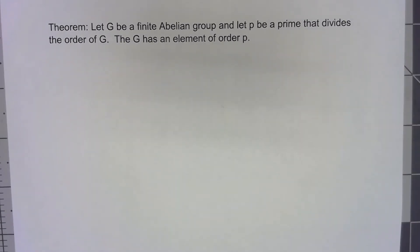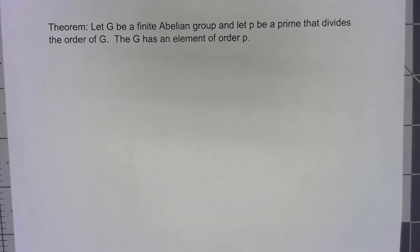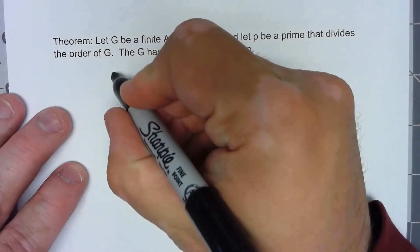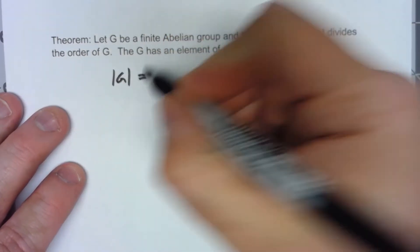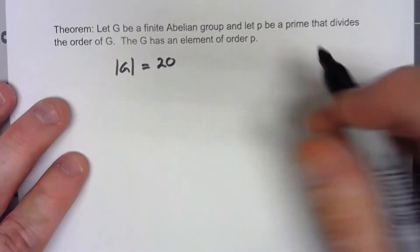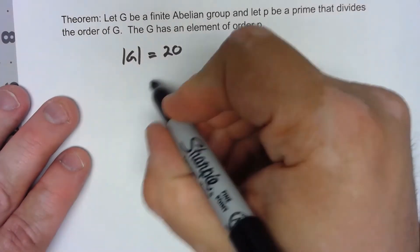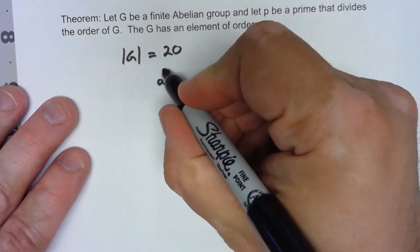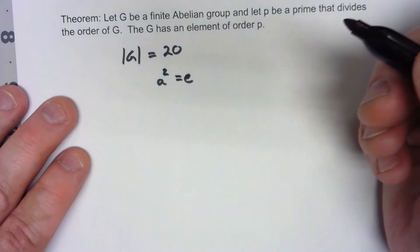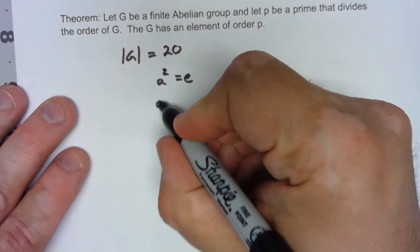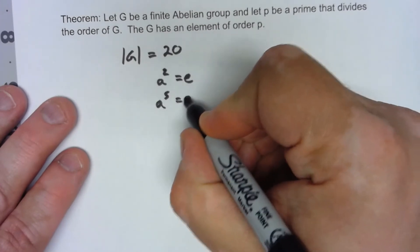Now that's only true for primes, so if we have a group and the order of G is equal to say 20, we know there's an element A with A squared equal to E. We know there's an element A with A to the fifth equal to E.